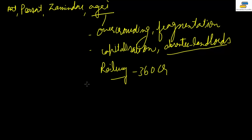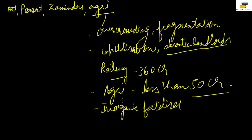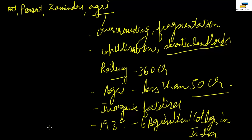British India spent less than 50 crore rupees on agriculture. Inorganic fertilizer was not known at that time — only animal manure was used. And until 1939, there were only six agricultural colleges in all of India. Today, every state has at least one agricultural university. There was also no focus on literacy, which further damaged agricultural productivity.